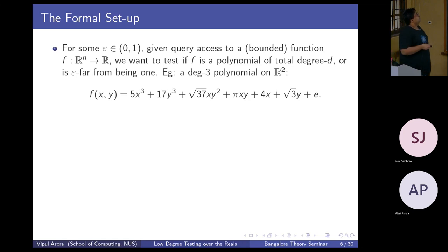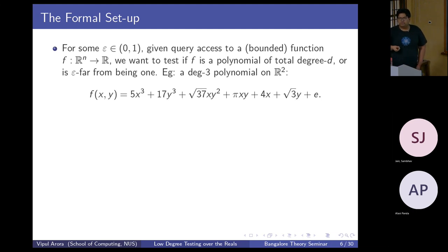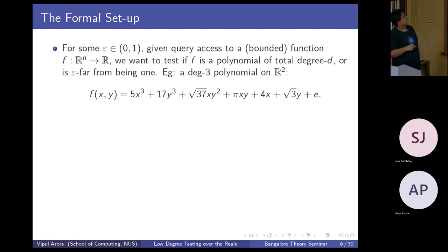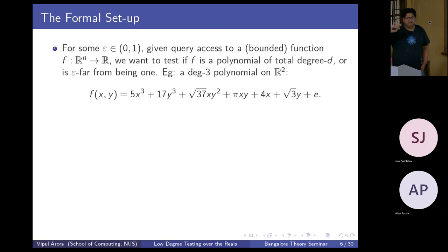Here is the formal setup. You're given some distance parameter epsilon between 0 and 1 — the width of the strip in which your algorithm is allowed to fail. Given query access to some bounded function over R^n, also taking values in R, you will decide if f is a polynomial of total degree d, or is epsilon far from being one. An example of a degree-3 polynomial over R^2 should be very familiar.